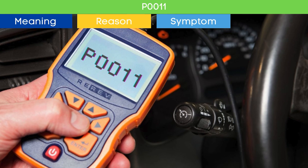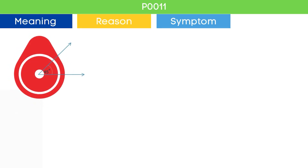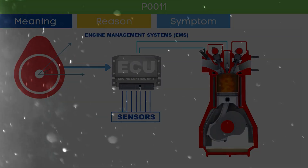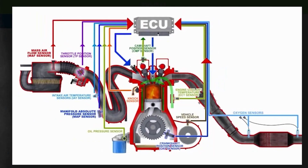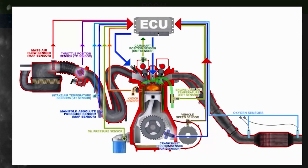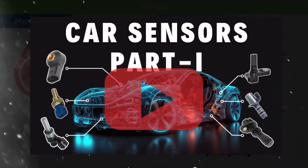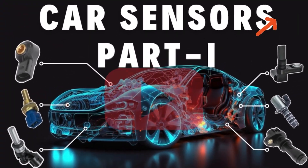Now that we know what the P0011 OBD-II code is, let's dive into the symptoms of P0011. Cam angle is a very crucial parameter in engine management systems to optimize the engine's performance. Due to the P0011 Code, there may be an issue in engine performance. Cam angle is only one of several engine management parameters used by the ECU, which also relies on other EMS sensor inputs. To learn more about sensors of the engine management system, you can check our detailed video on car EMS sensors.